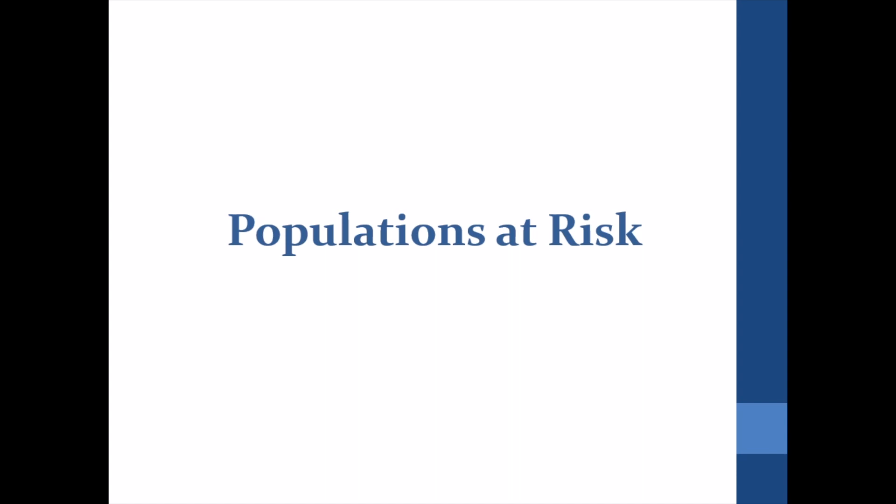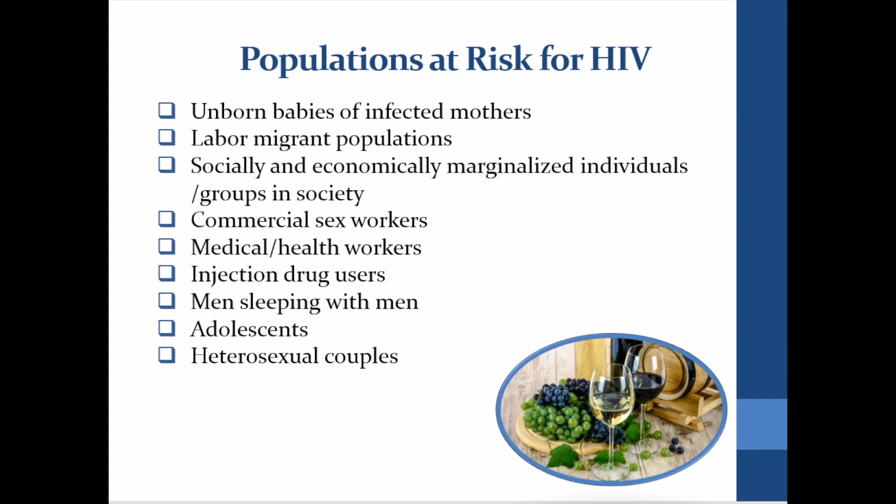A number of people are at risk for HIV. Unborn babies can be infected in the womb during pregnancy, childbirth, or through breastfeeding. Migrant workers are also at risk for HIV, as they sometimes tend to sleep with people other than their regular sexual partners. Sexual workers, people who share contaminated syringes during drug use, and men who sleep with men are also at high risk for HIV.